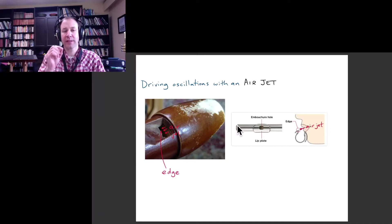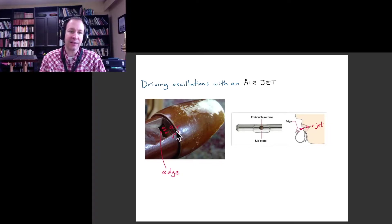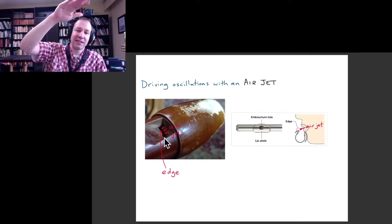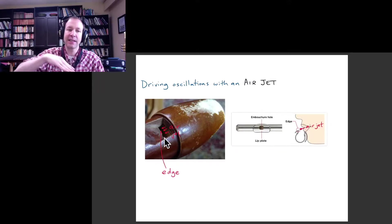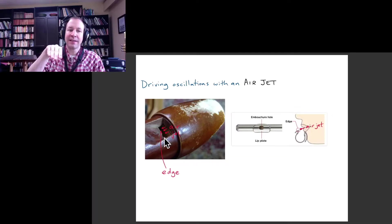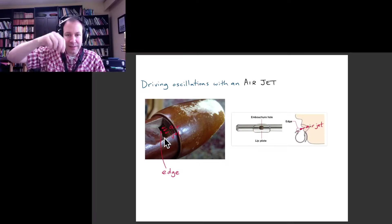You don't have to work as hard with the recorder. You don't have to make a fine narrow jet of air with your mouth because the mouthpiece of the recorder does that for you. So you just blow into it and the recorder channels your breath into an air jet, which then is directed towards this edge that divides the outside of the instrument from the inside. So in both cases, you've got a continuous air jet that's sent towards the edge of a hole that goes into the instrument.